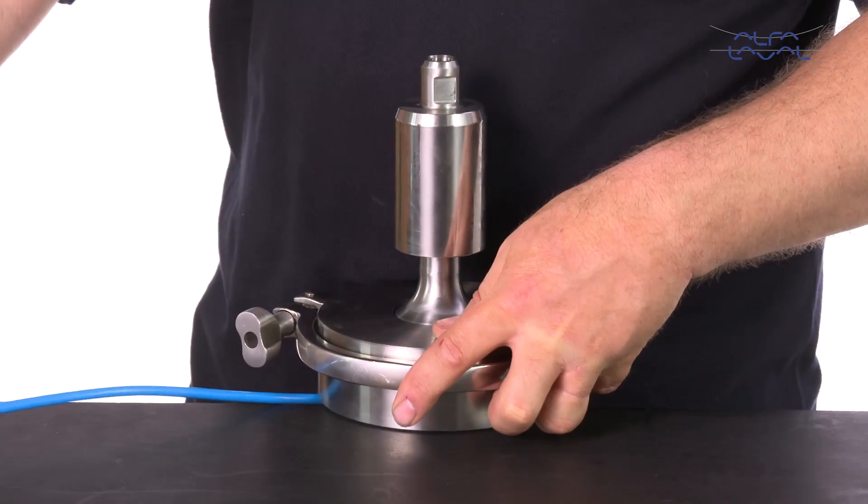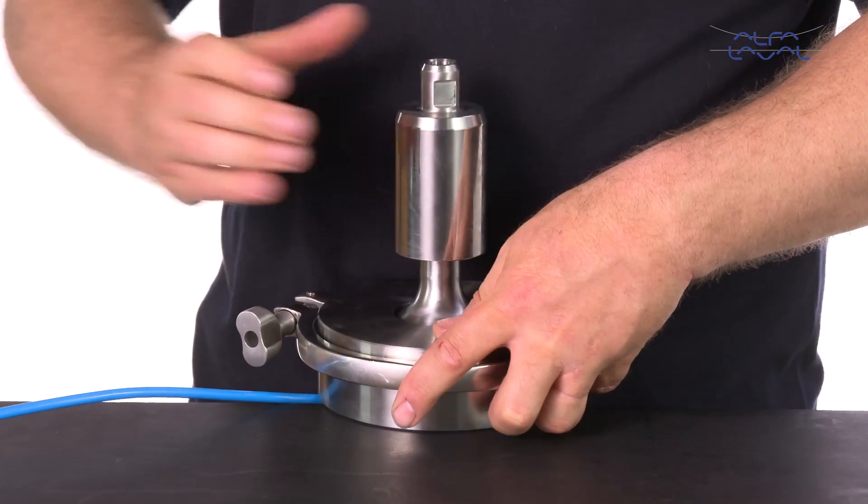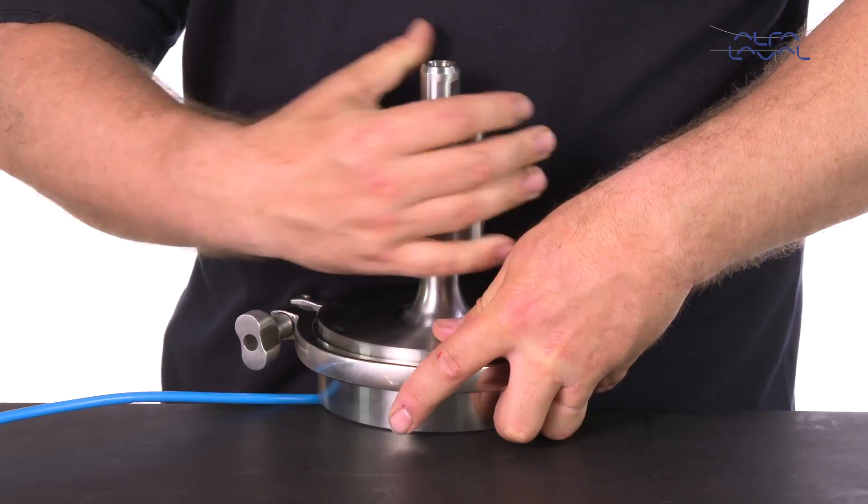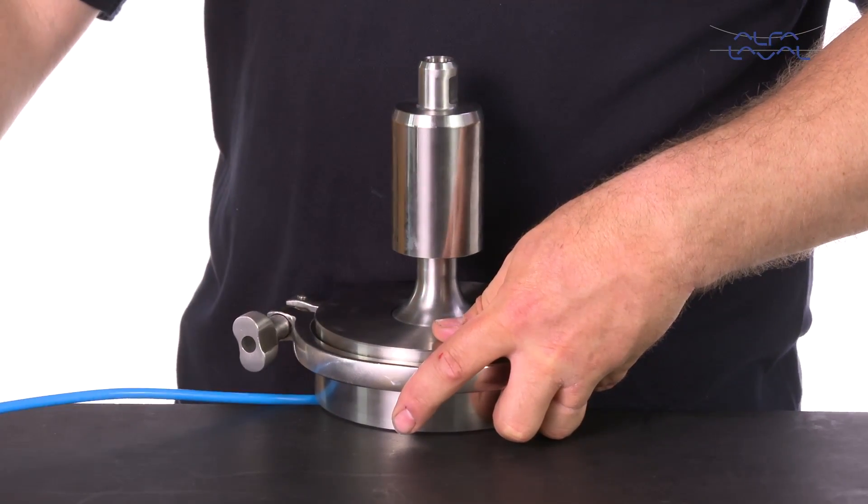Turn on the air and then turn it off. Using your hands, turn the plug 30 degrees. Turn on the air again and then turn it off.